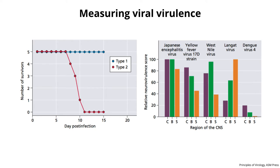Here are two examples of quantifying viral virulence. On the left, we're infecting mice with two different types of poliovirus, with the y-axis showing number of survivors versus day after infection. Type 1 poliovirus in blue — the mice survive the entire course of the experiment, no disease apparent. Whereas type 2 virus, by 10 or 11 days after infection, they're all dead. You could quantify how much virus would cause death in 50% of the survivors — that gives you a way of measuring the outcome.